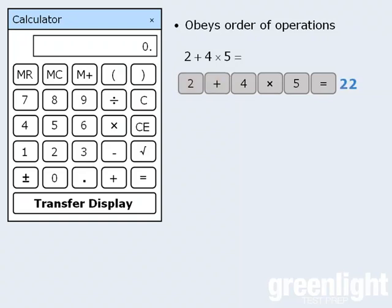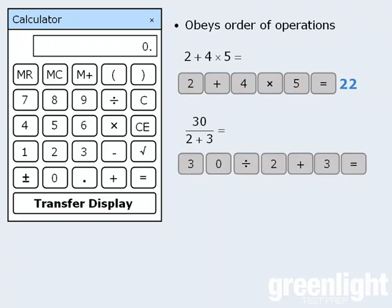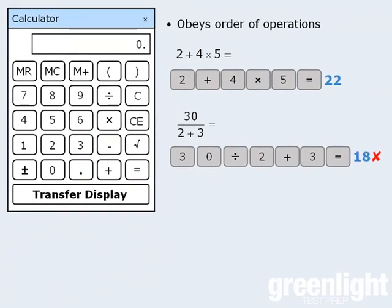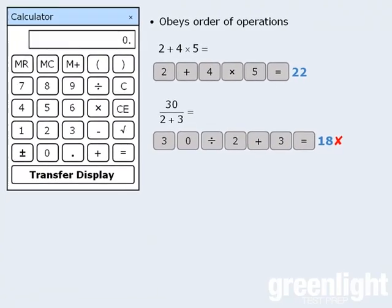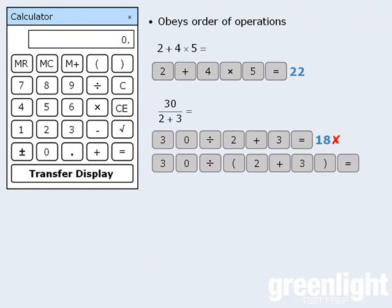Given this, it's important to be careful when you perform longer calculations. For example, if you want to evaluate this expression, entering 30 divided by 2 plus 3 will yield an incorrect value of 18, because the calculator will obey the order of operations and divide 30 by 2 first, and then add 3 to get 18. To correctly evaluate this expression, we can use the brackets buttons. If we perform our calculations by pressing these buttons, the calculator will yield the correct value of 6.